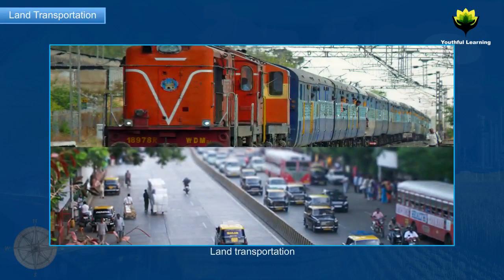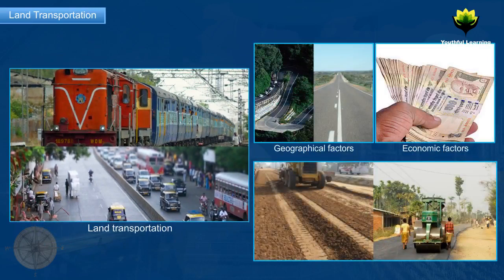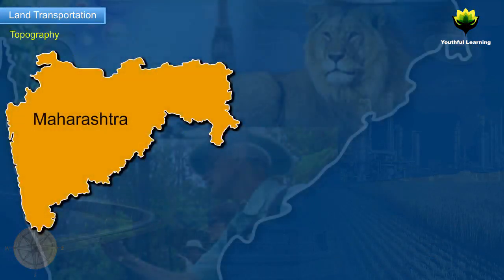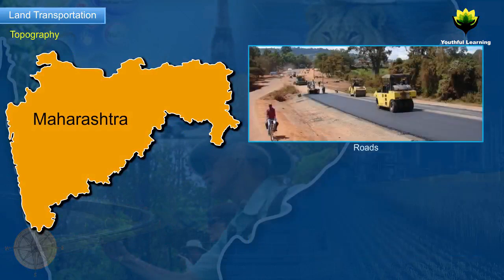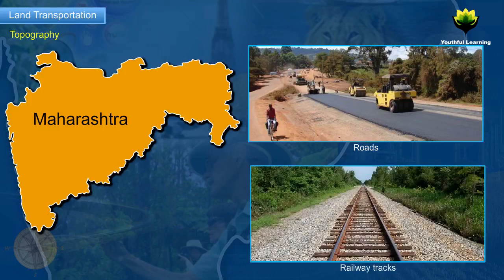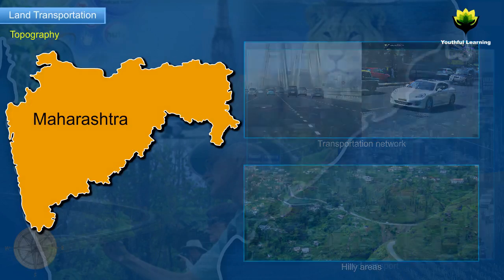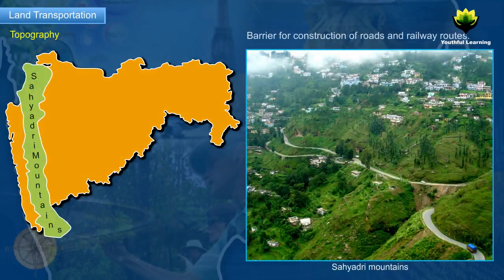Land Transportation. Various geographical and economic factors affect the development of land transportation. One such factor is topography. Plains are flat lands and offer least resistance, so it is easier to construct roads and lay out railway tracks in plains unlike hilly areas. Thus, plain lands have a more extensive transportation network than hilly areas. This is the reason why land transportation is extensively spread in the state, except in the Sahyadri Mountains, which pose as a barrier for construction of roads and railway routes.